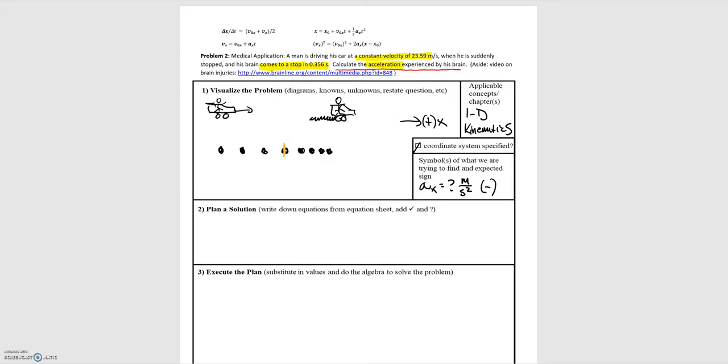We'll go ahead and call that x naught is equal to 0 meters. And then we are given that the velocity is constant to the left of this point.